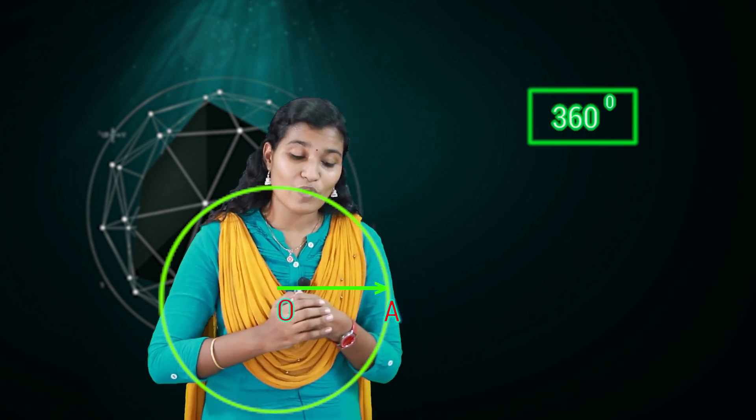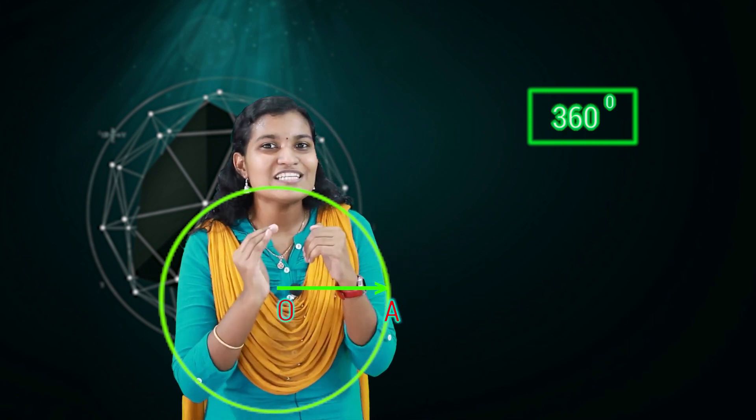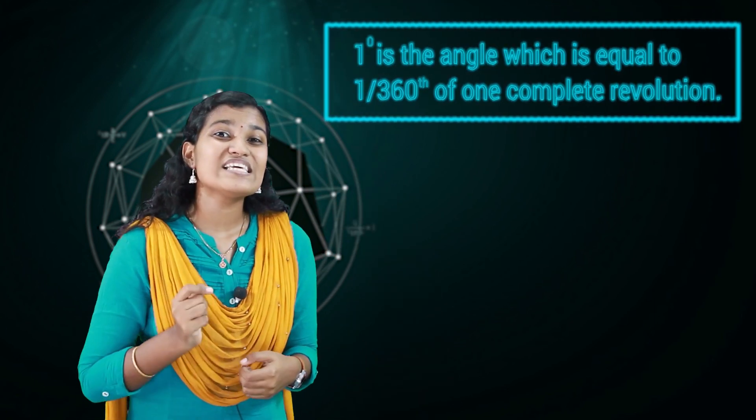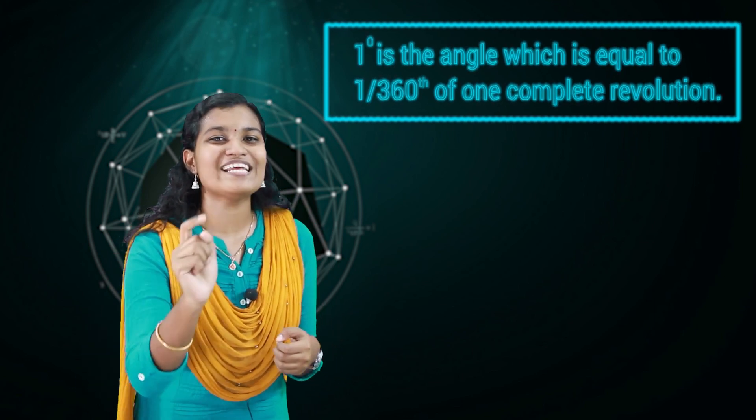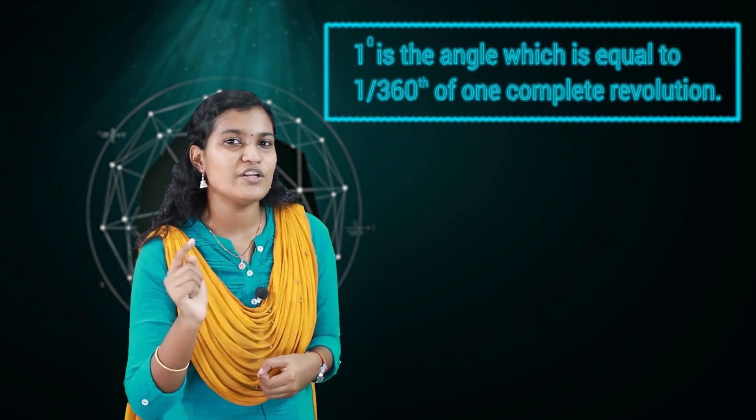That is why one complete rotation or revolution is taken as 360 degrees. Then what is one degree? If we divide the angle of one complete revolution into 360 equal parts, one part is called one degree. So one degree is the angle equal to one three-hundred-and-sixtieth of one complete revolution.